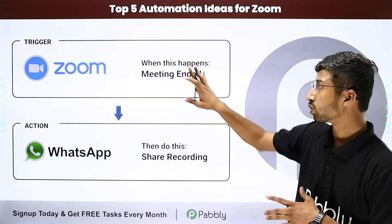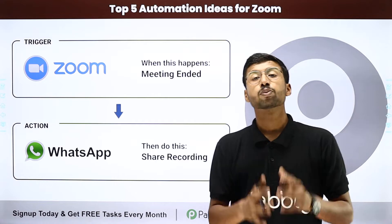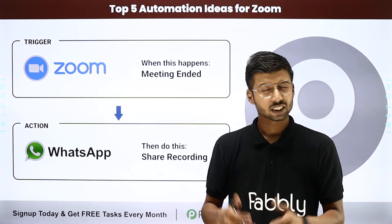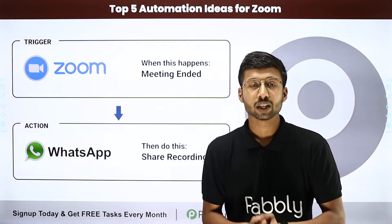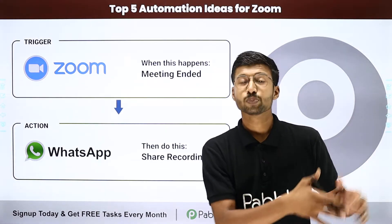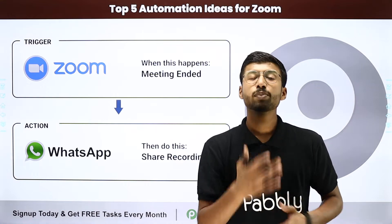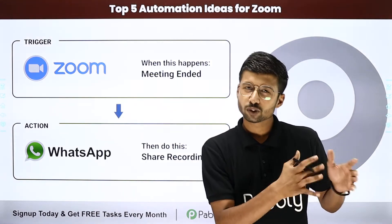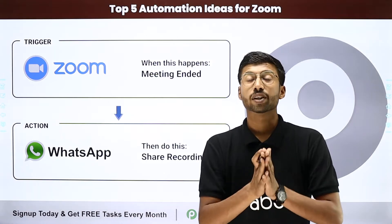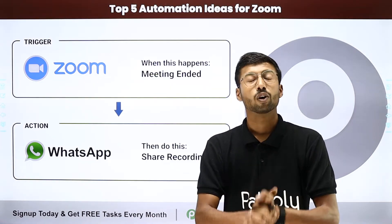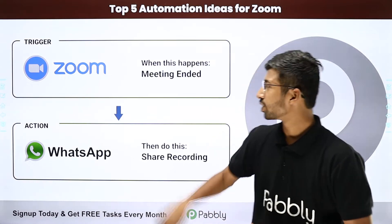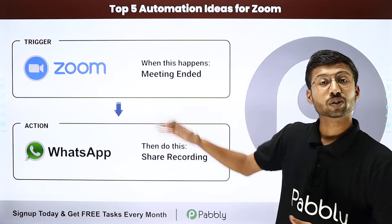Our first automation is Zoom to WhatsApp, and this is my personal favorite because the number of use cases are endless. Suppose you are on a meeting with your team members and you were recording that Zoom meeting. You want that whenever the meeting ends, the recording of that Zoom meeting should automatically be sent to all of your registrants and team members who were on those meetings.